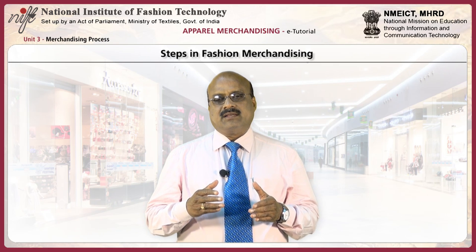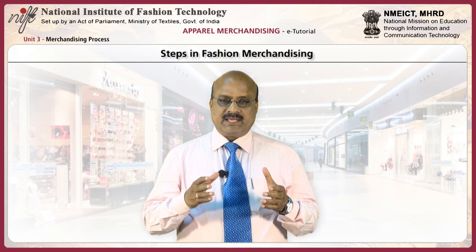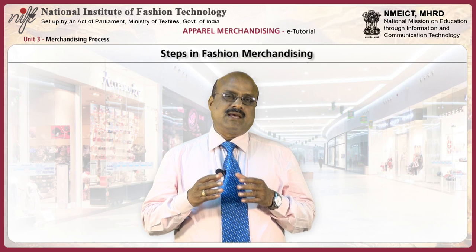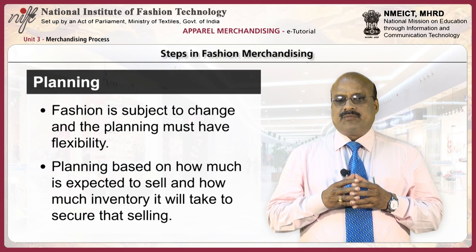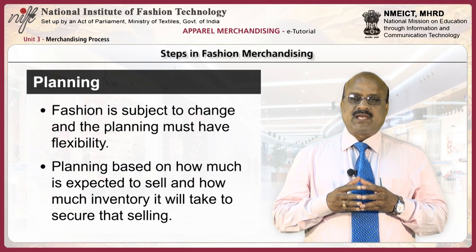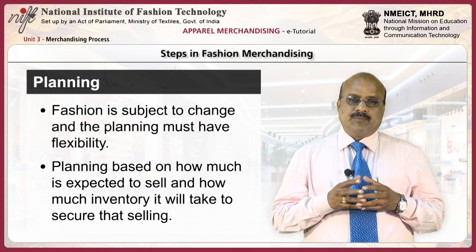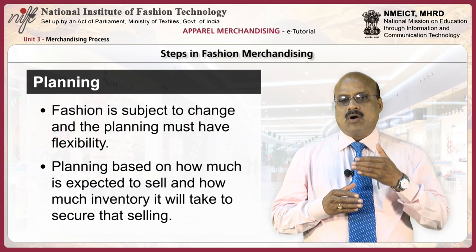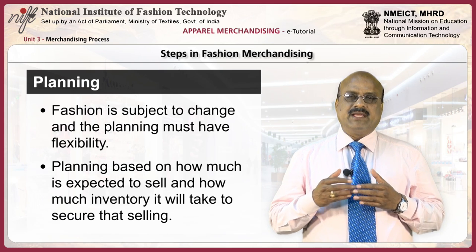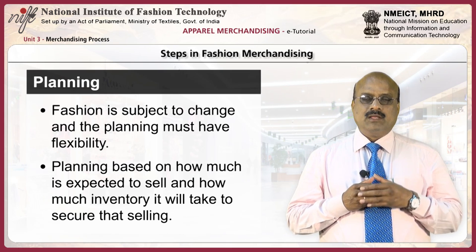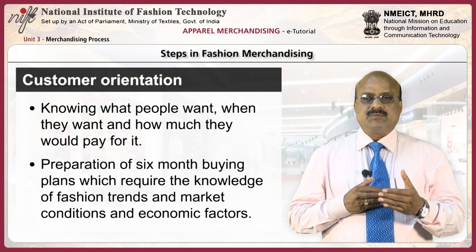Fashion merchandising consists of three main steps: planning, buying and selling. Let us first look at planning. Fashion is subject to change and thus planning must have flexibility. Planning is based on how much we expect to sell and how much inventory it will take to secure that selling. Plan the assortments with customer orientation.